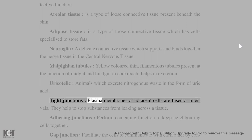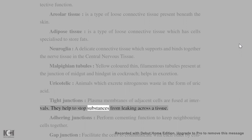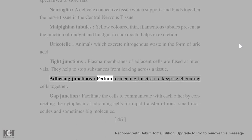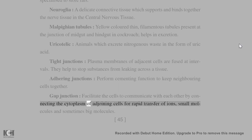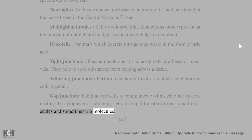Tight junctions: plasma membranes of adjacent cells are fused at intervals; they help to stop substances from leaking across a tissue. Adhering junctions perform cementing function to keep neighboring cells together. Gap junctions facilitate cells to communicate with each other by connecting the cytoplasm of adjoining cells for rapid transfer of ions, small molecules, and sometimes big molecules.